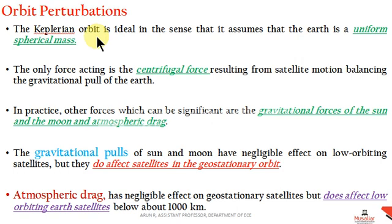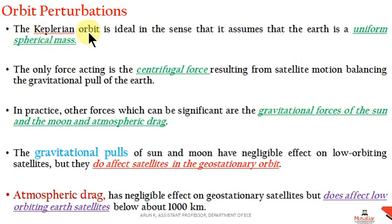According to Kepler's law, we come to several phenomena such as changes in velocity from the farthest and nearest points of the orbit. Aphelion means the farthest point in the orbit from a planet, and perihelion means the nearest point. Keplerian orbit assumes the Earth is a uniform spherical mass, and the only force acting is the centrifugal force from satellite motion balancing the gravitational pull of the Earth.